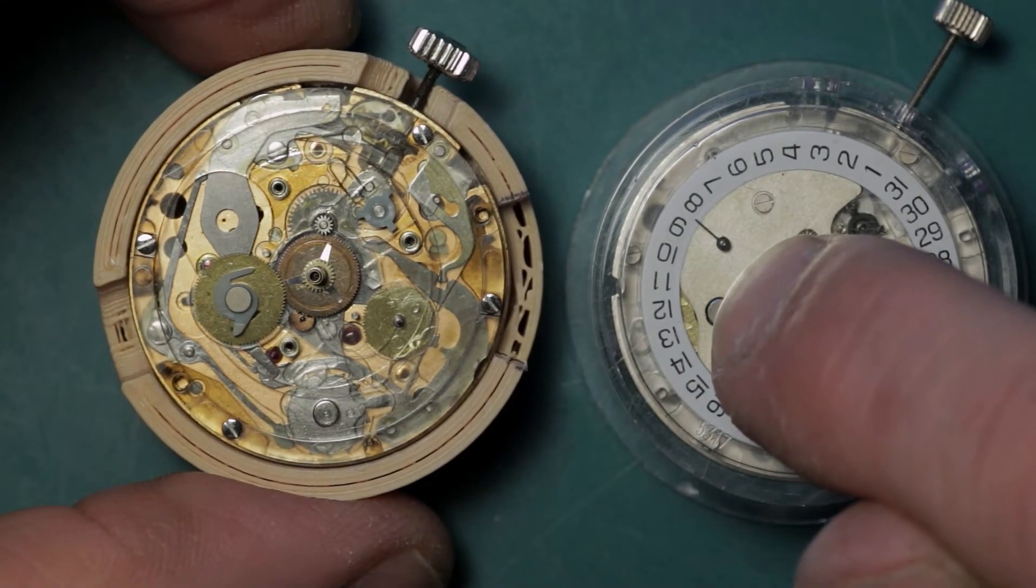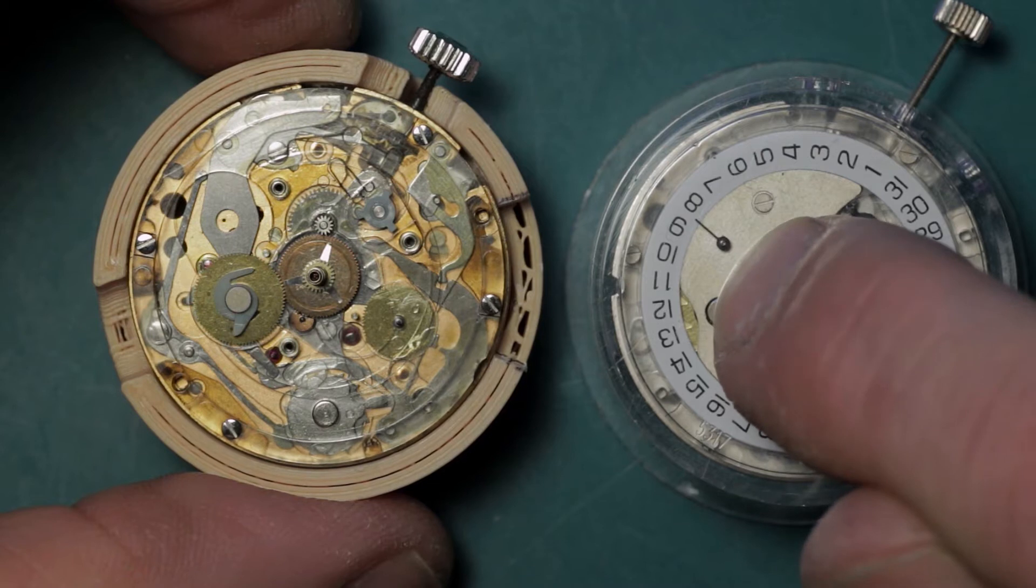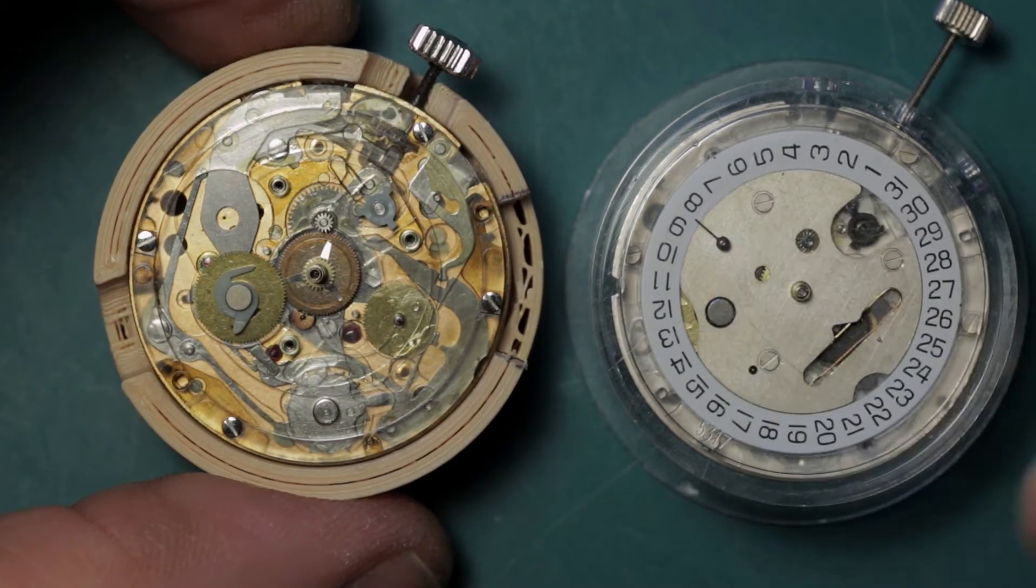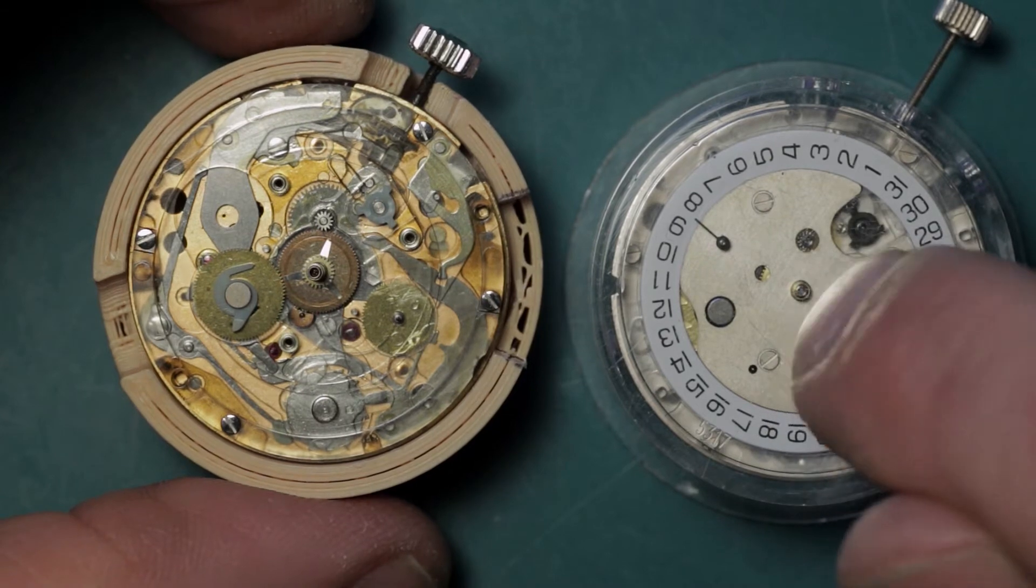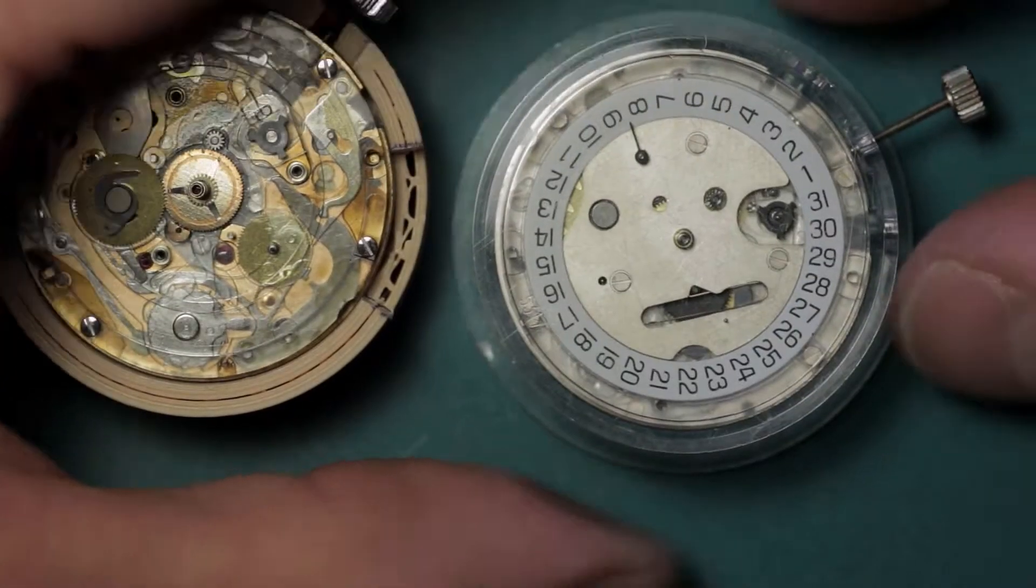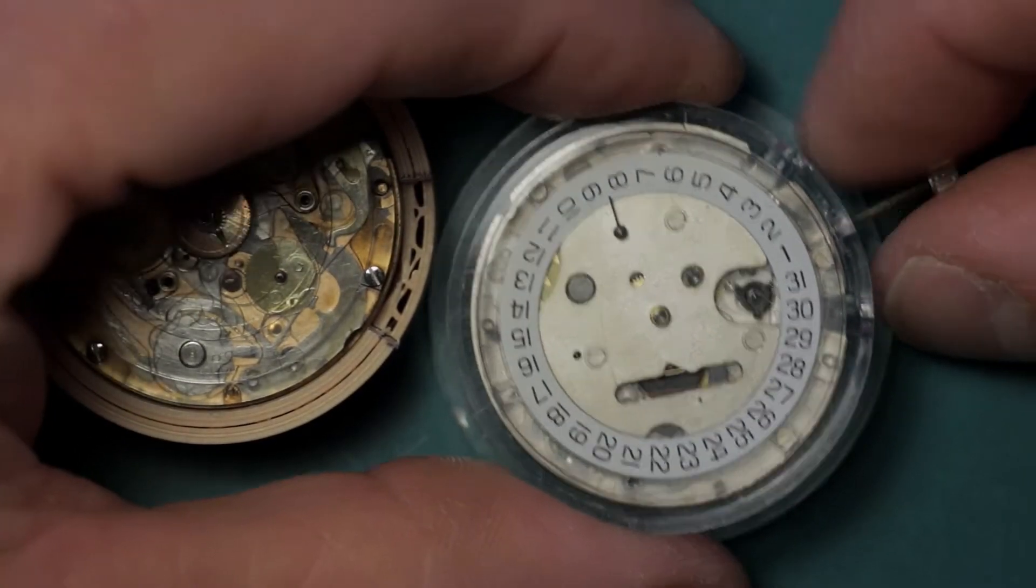And the obvious difference, as mentioned, is that the top wheel on the Lemania is a 24-hour counter, whereas the top wheel on this one is your minute recorder. And the central minutes recorder isn't on this one at all.